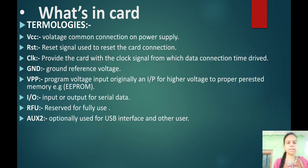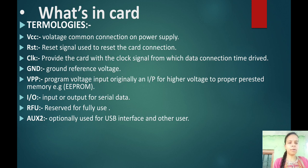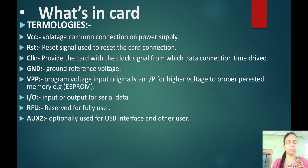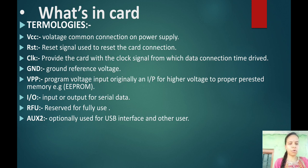The terminologies are: VCC — voltage common connection for power supply; RST — reset signal used to reset the card connection; CLK — provides the card with the clock signal from which data connection timing is derived; GND — ground reference voltage; VPP — program voltage input, originally for higher voltage to program memory; I/O — input/output for serial data; RFU — reserved for future use; AUX2 — optionally used for USB interface and other uses.